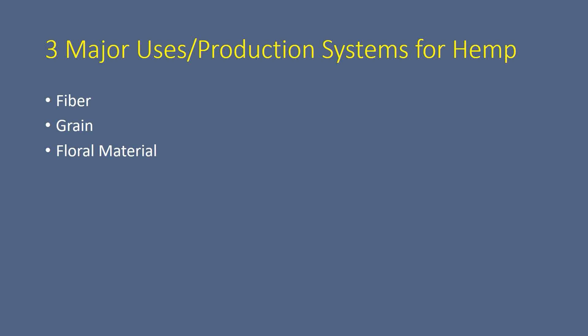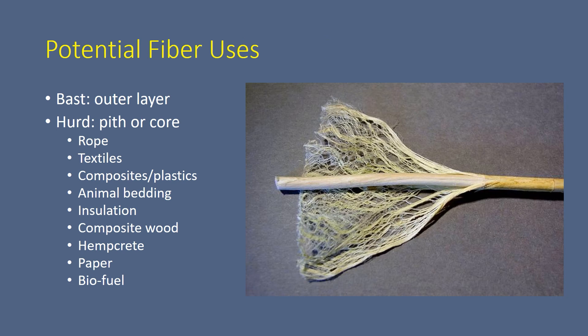We really have three major production systems for hemp here in Kentucky. They are fiber, grain, and floral material. We'll talk a little bit about each one, starting with fiber.